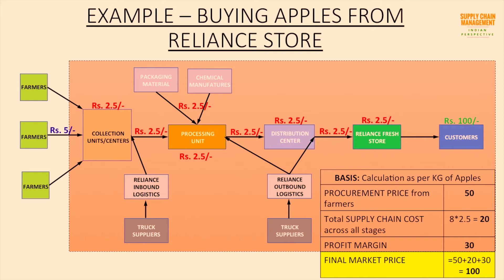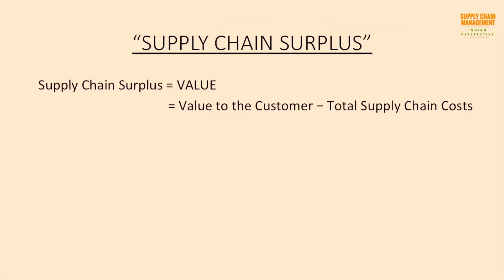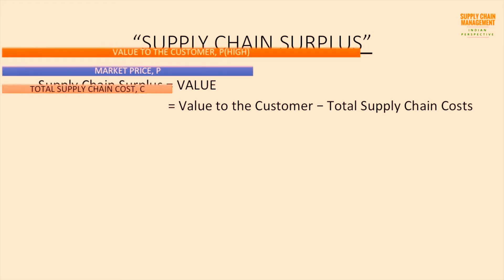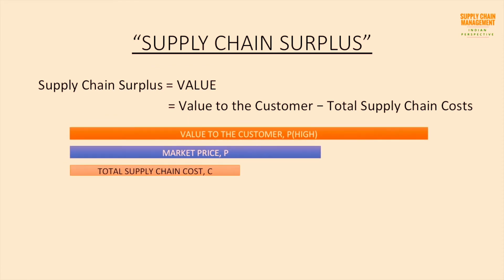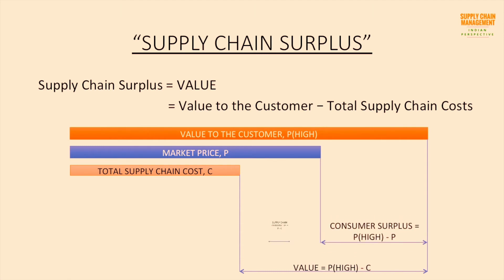From this example we understand how to calculate total supply chain costs. Now let's finally understand supply chain surplus. Supply chain surplus — the value generated in a supply chain — is the difference between the value to the customer and total supply chain costs. Figuratively, value V = PI minus C, where PI is value to the customer and C is the total supply chain cost. We can see that this value is the addition of consumer surplus and supply chain profitability.